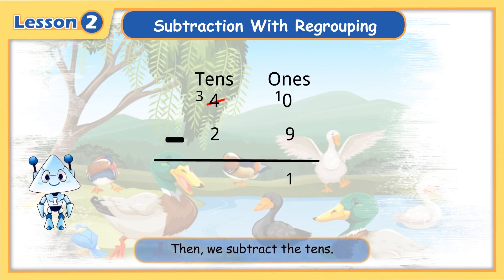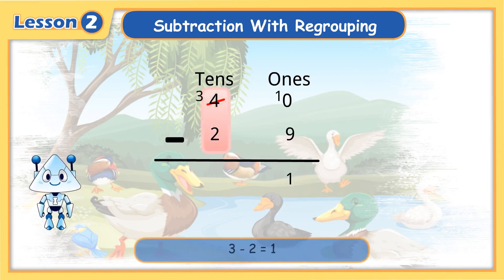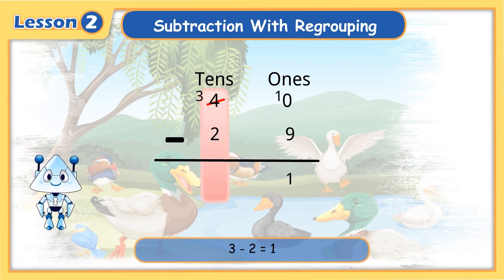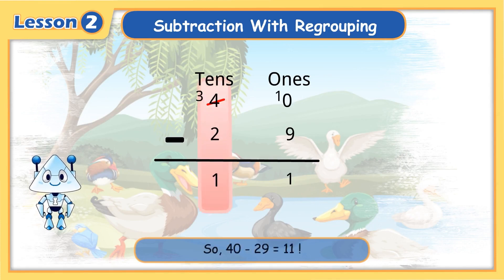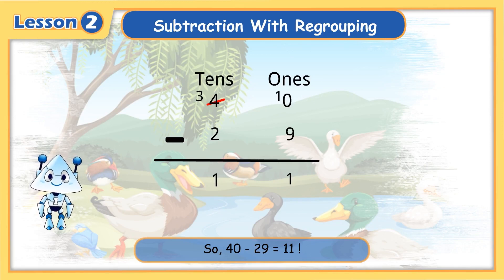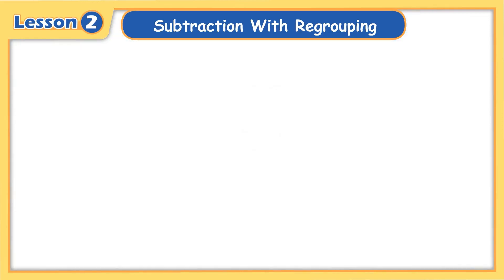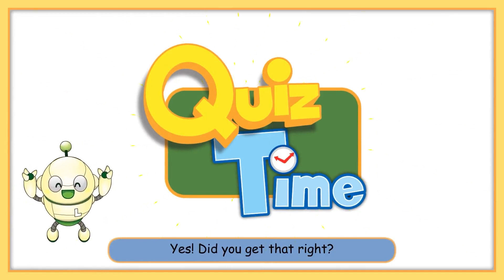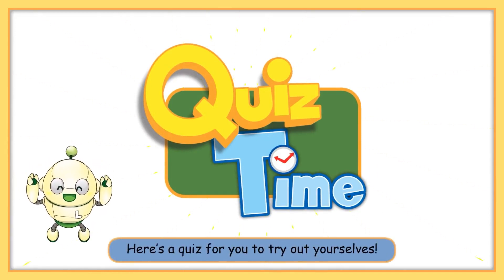Then we subtract the tens. Three minus two equals one. So, forty minus twenty-nine equals eleven. Yes! Did you get that right? Here's a quiz for you to try out yourselves.